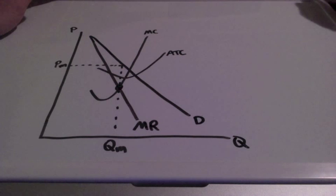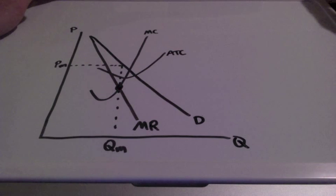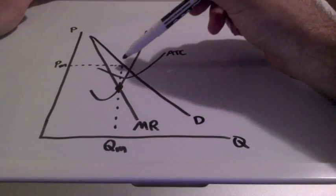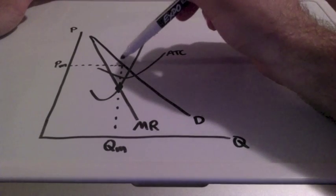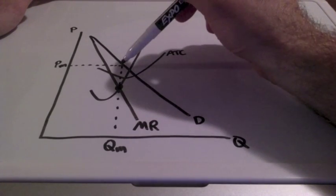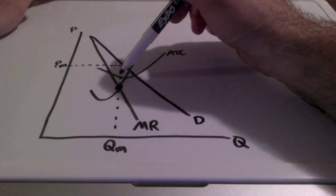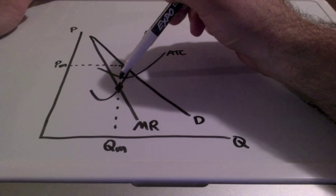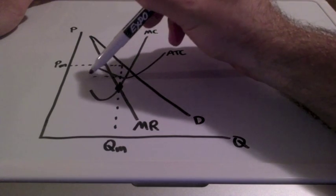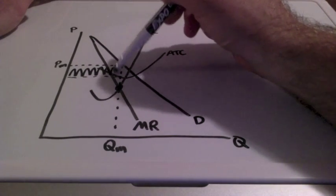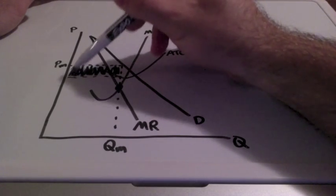Because this is a monopoly and monopolies are the price setters, they have opportunities to make profit. Where is profit going to be located? The price is going to be set above average total cost. We locate our price where it's touching the demand curve, all the way down to where it touches average total cost, and we bring this all the way over.